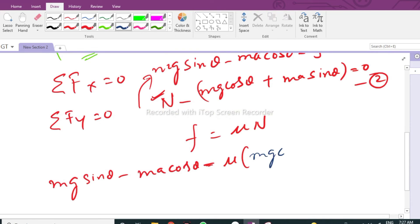N is mg cosine theta plus ma sine theta from equation two. So we can cancel out all these m's and we will simplify this.